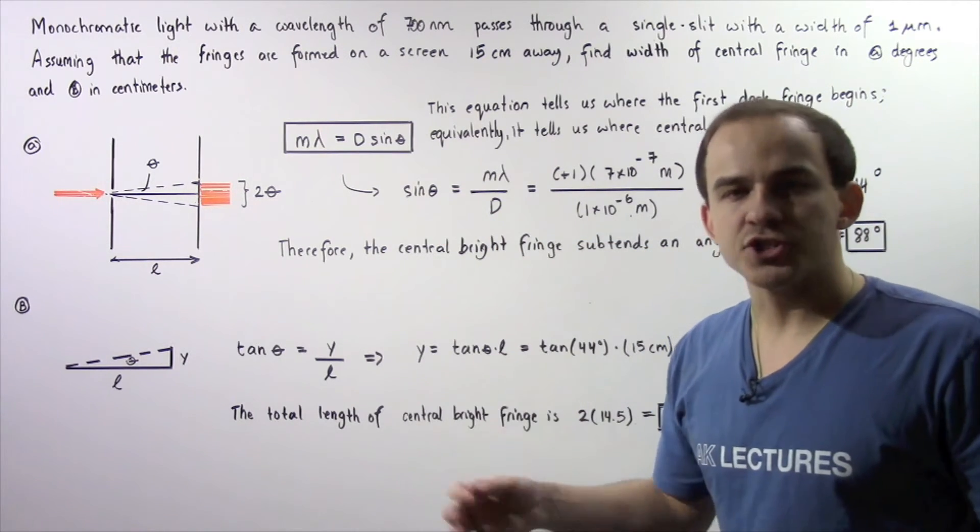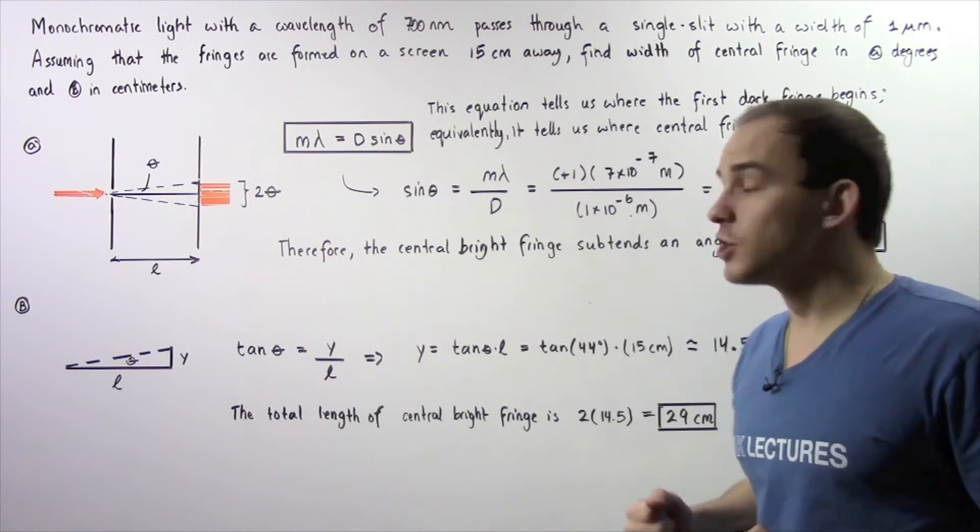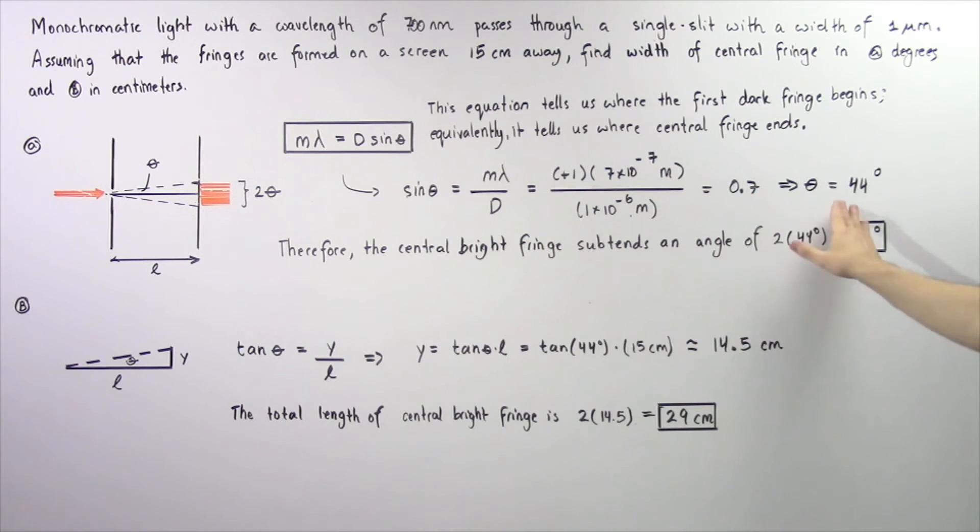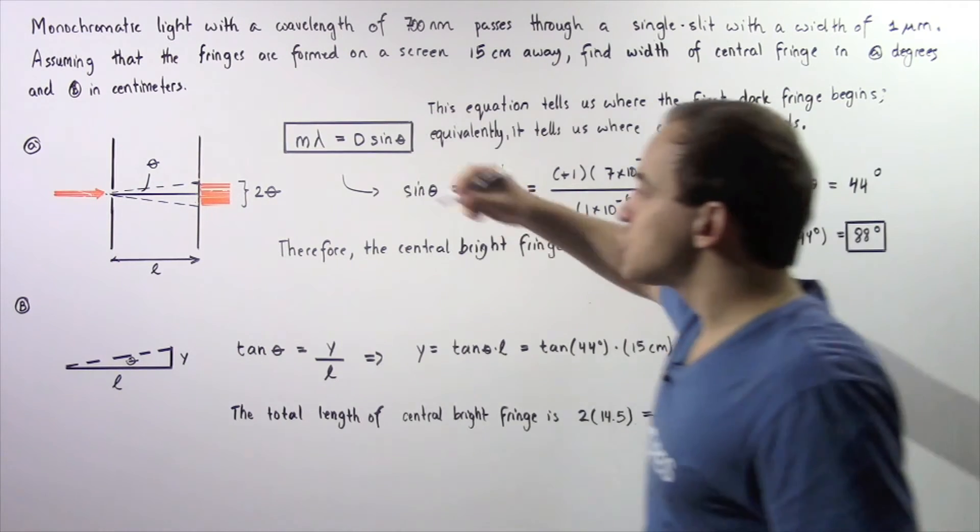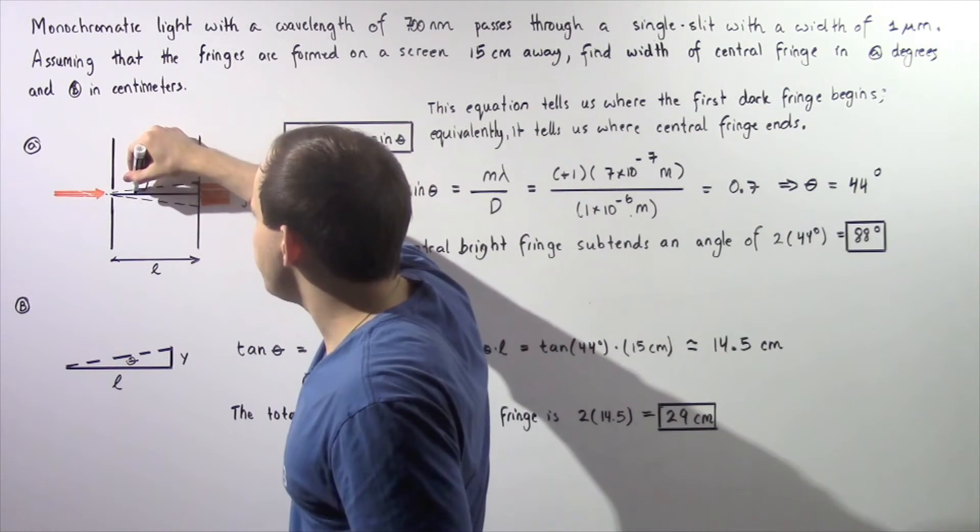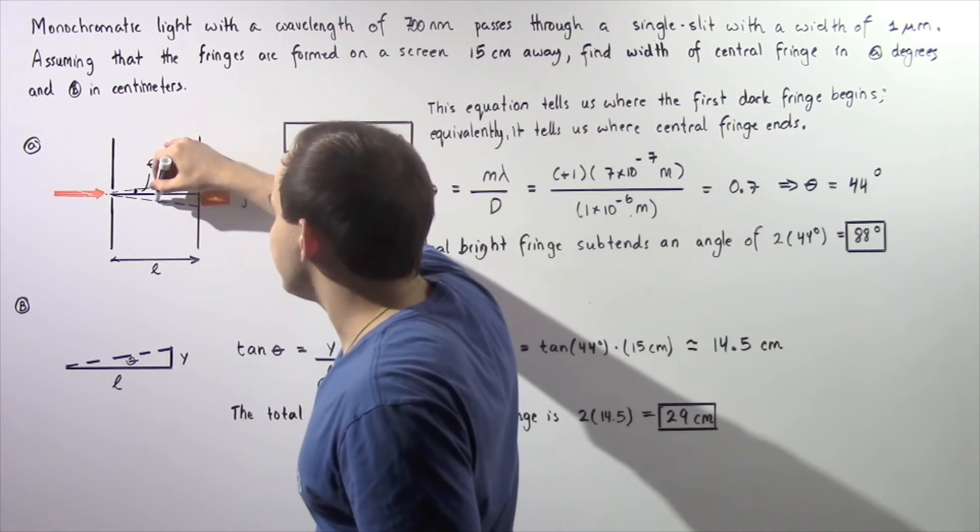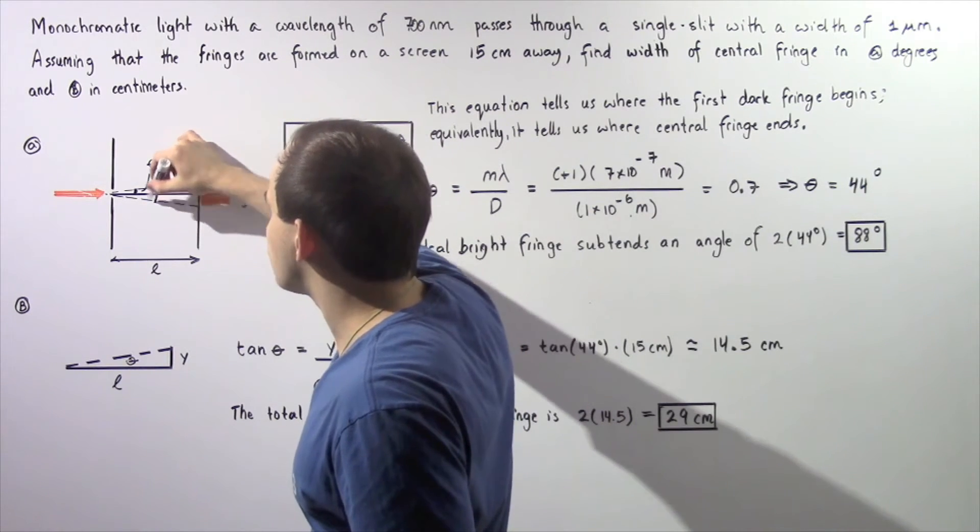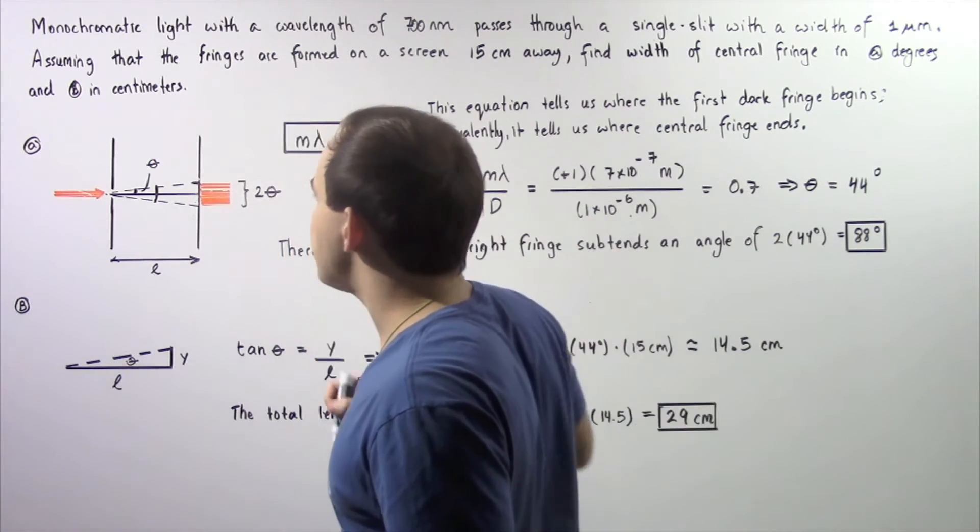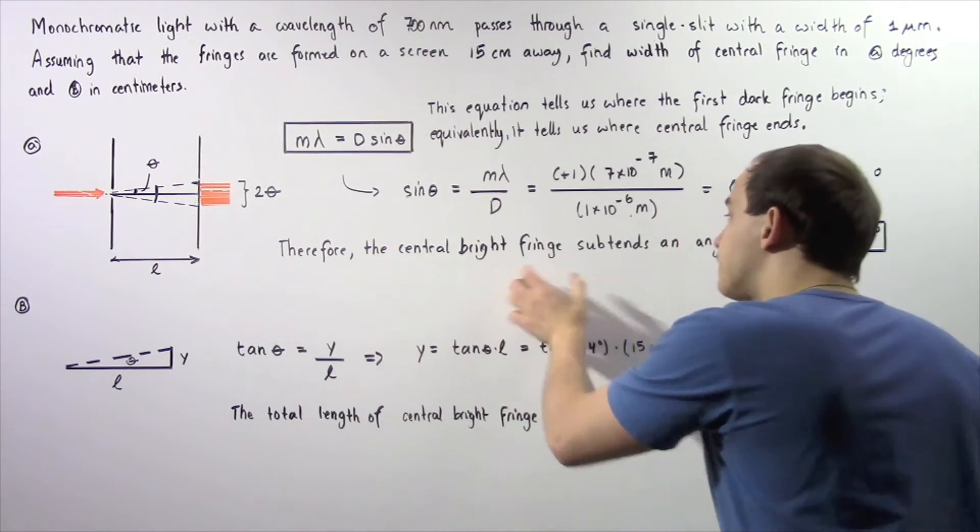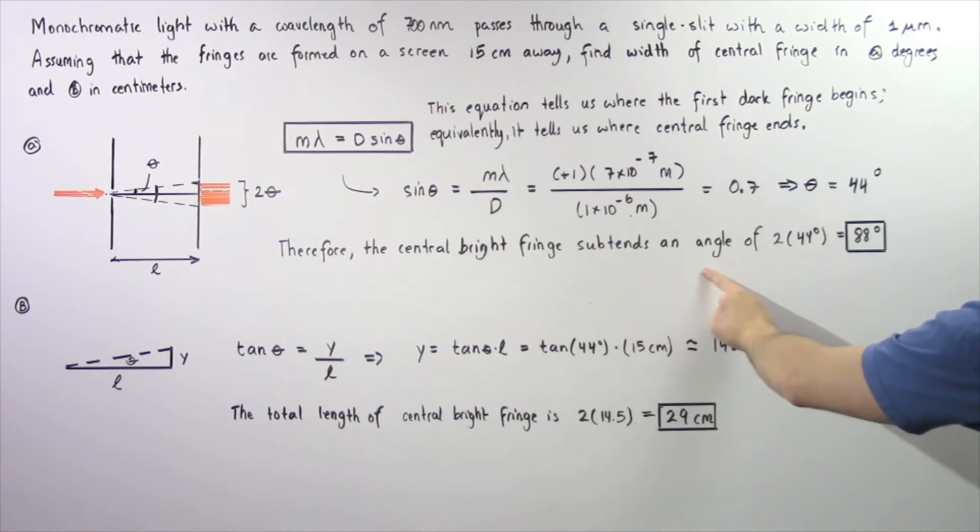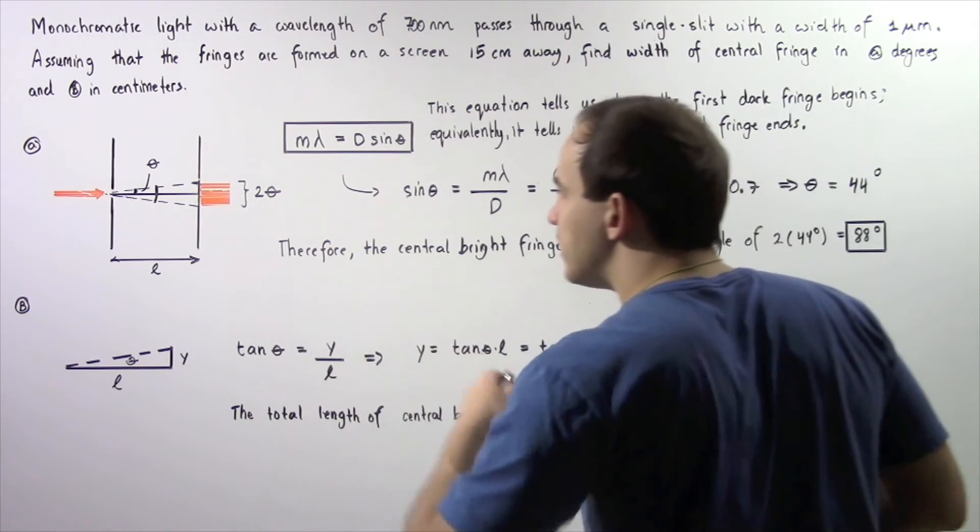Now we take the inverse of the trig sine function of 0.7 and that gives us about 44 degrees. So this degree measure is 44 degrees. Now to calculate this entire degree measure we multiply that by 2. Therefore the central bright fringe subtends an angle of 2 multiplied by 44 or equivalently 88 degrees.